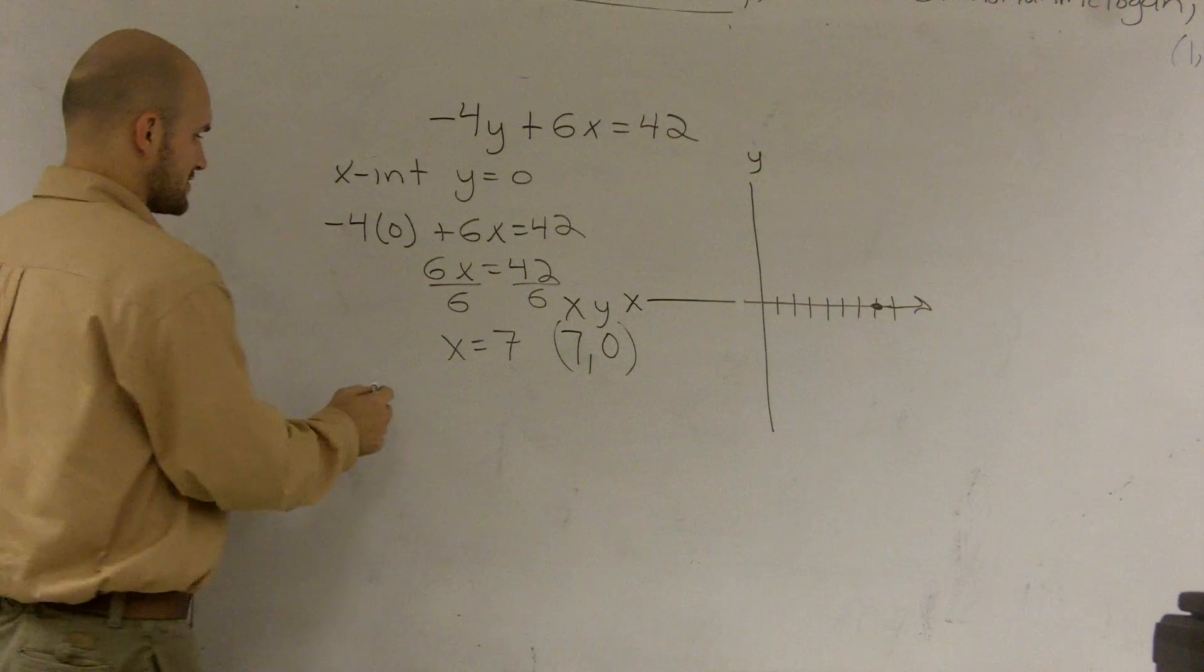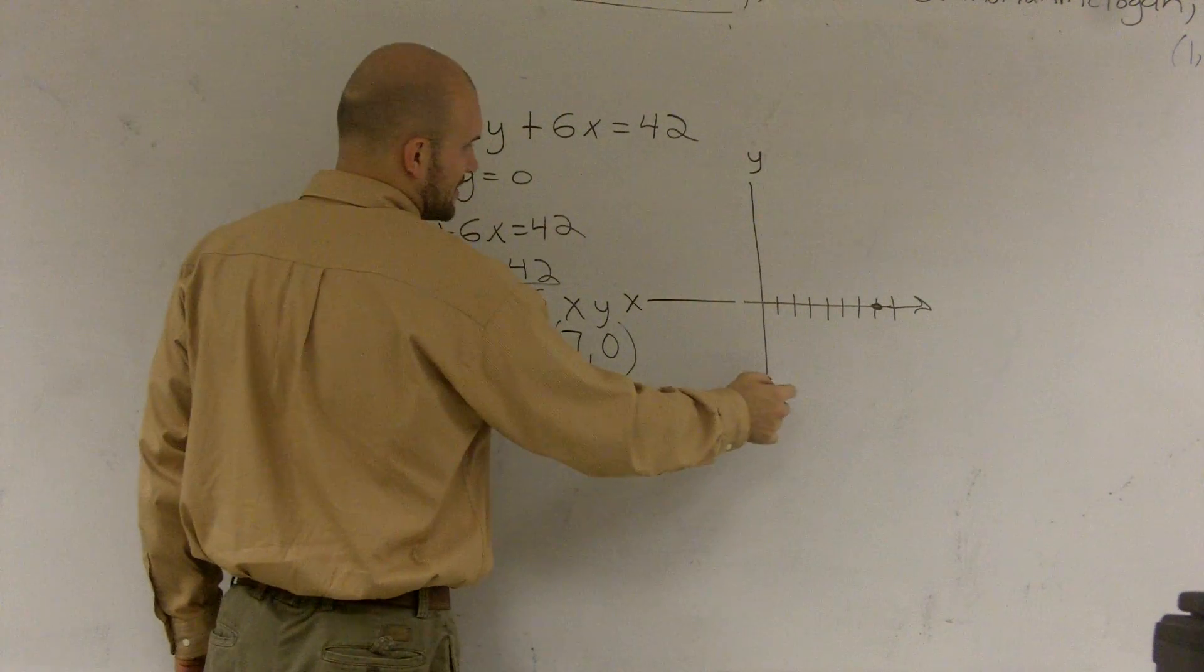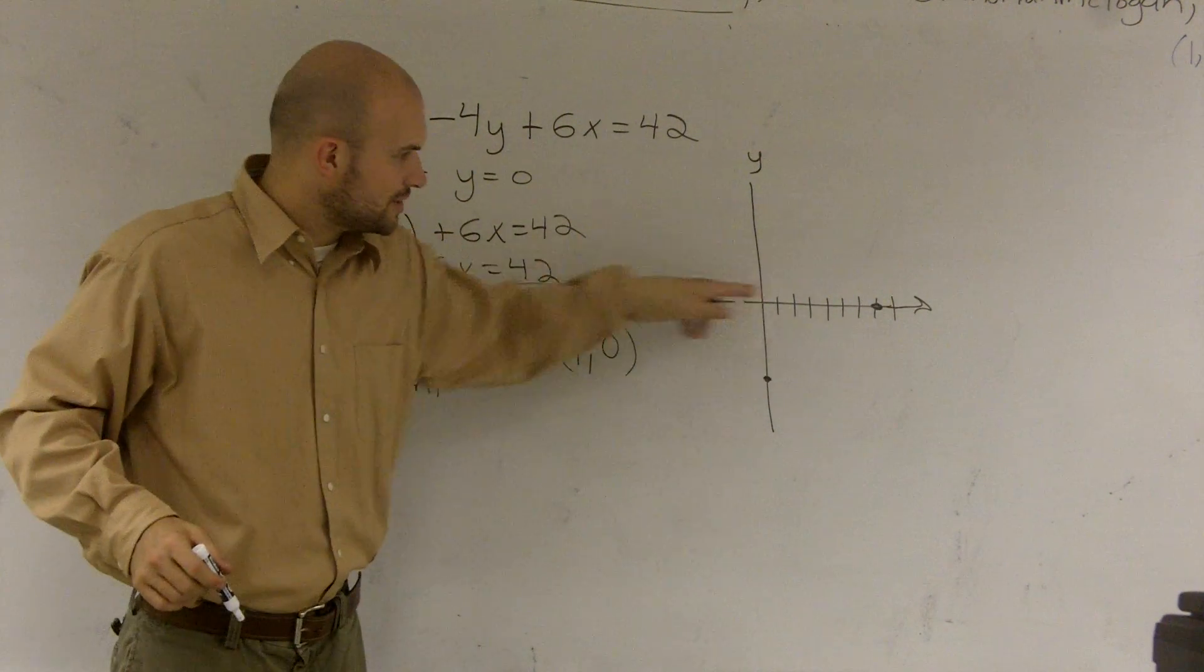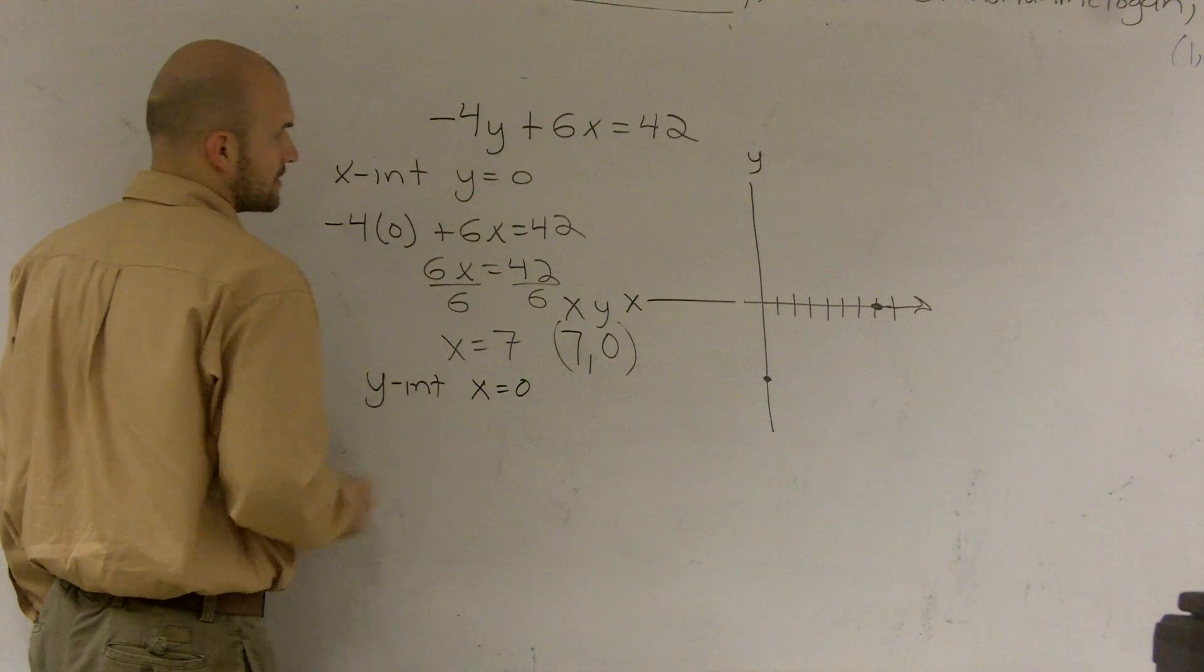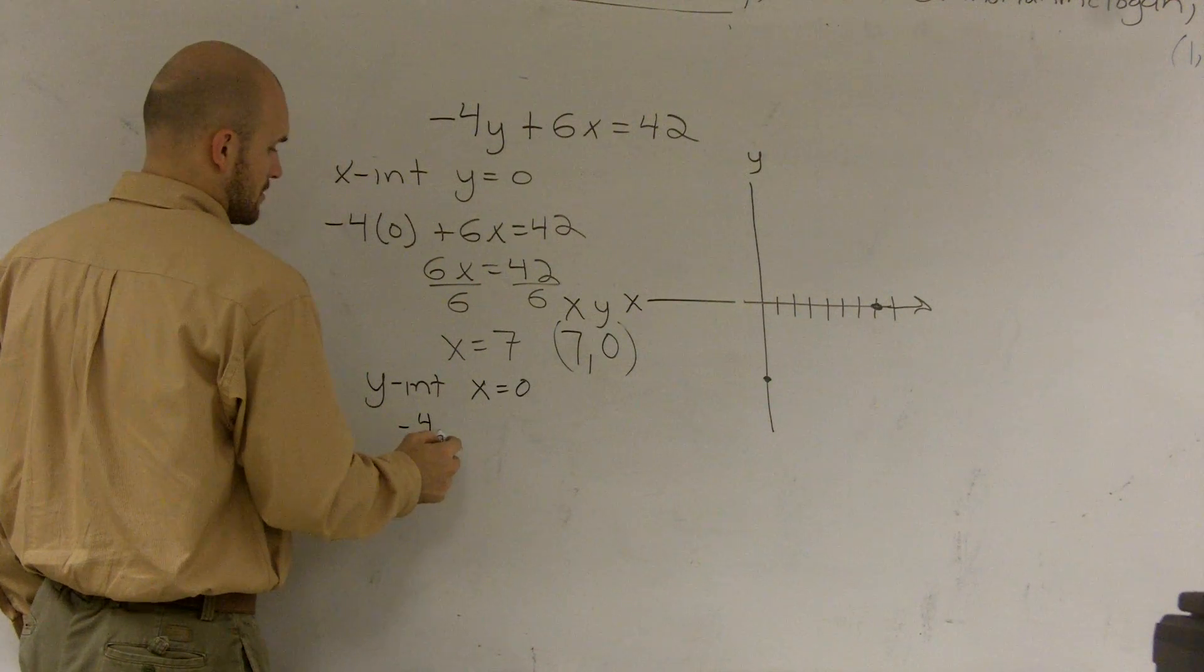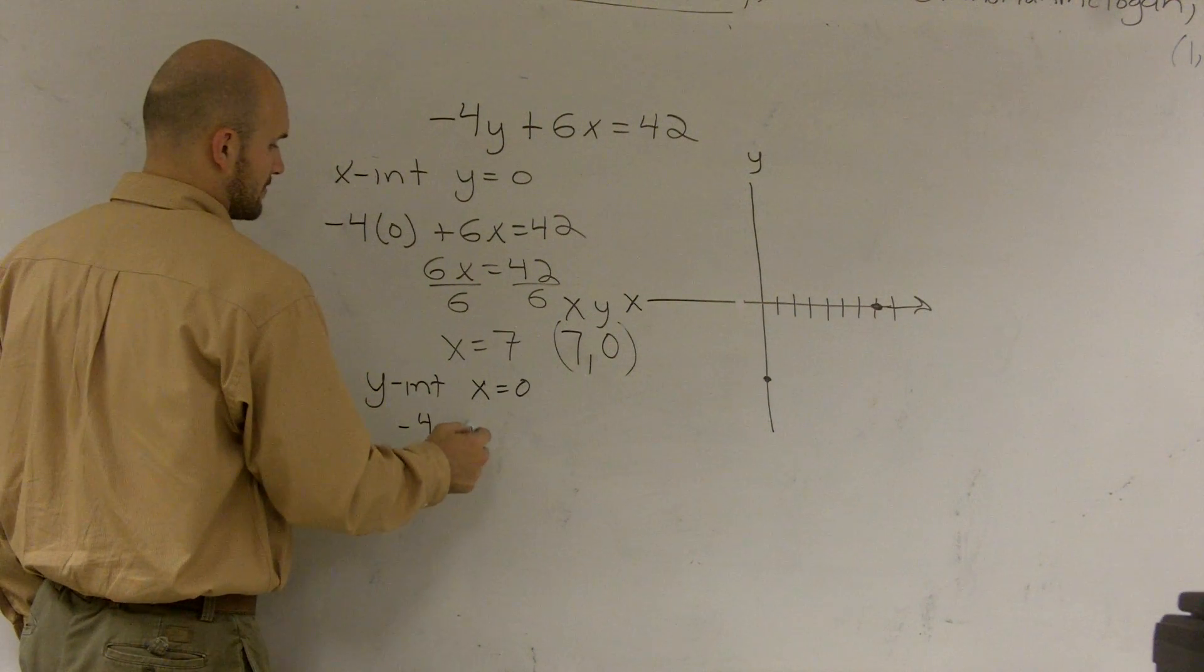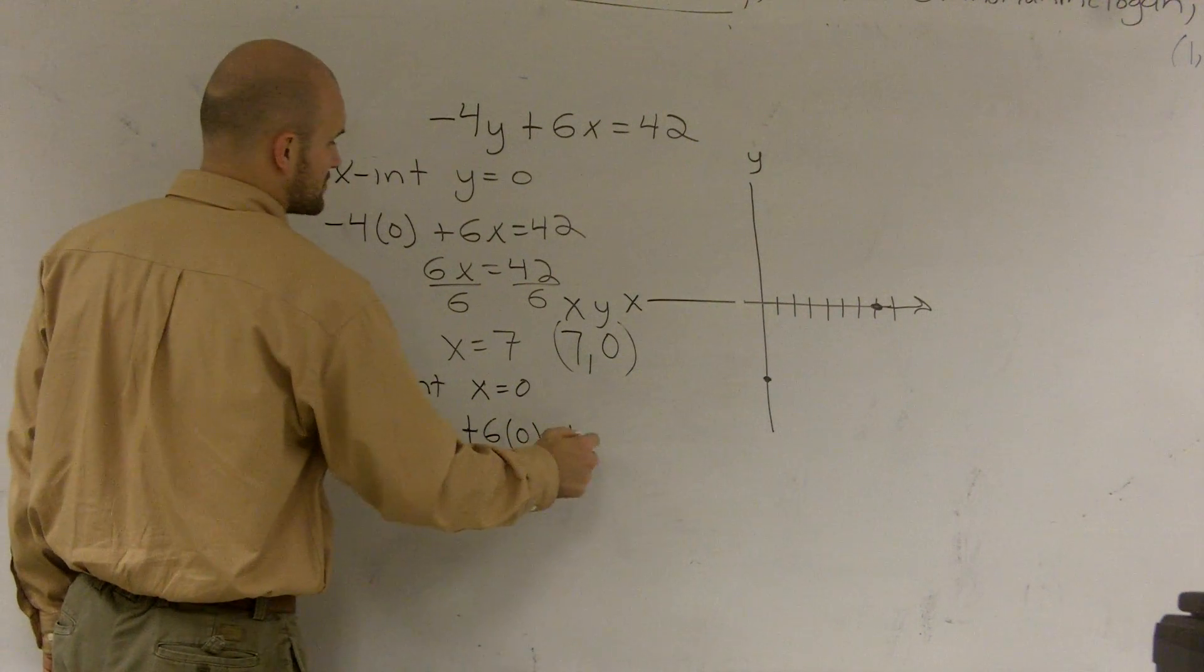Then, to find the y-intercept, if I was going to say a y-intercept is down here or something, the y-intercept, my x value is equal to 0. So I'm going to say x equals 0. So I plug in a 0 in for x. So I get a negative 4y plus 6 times 0 equals 42.